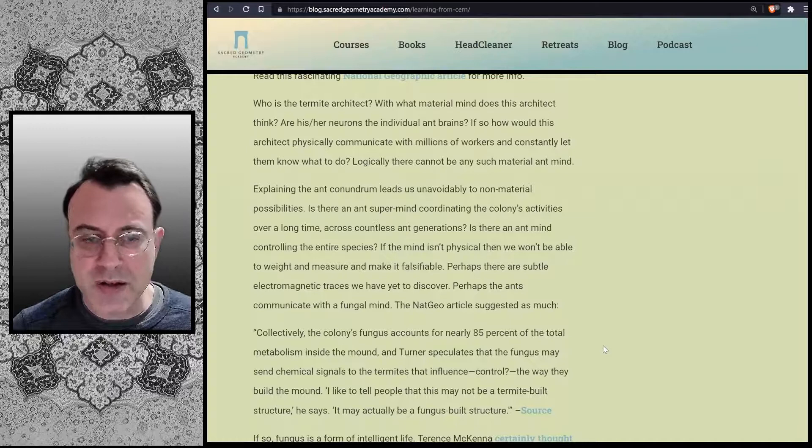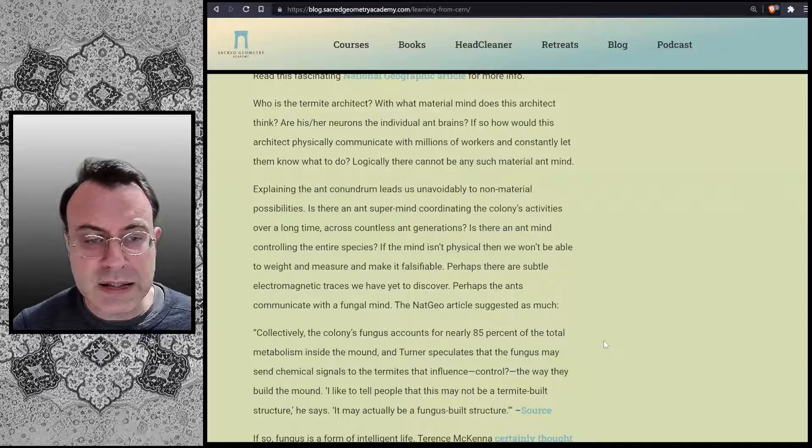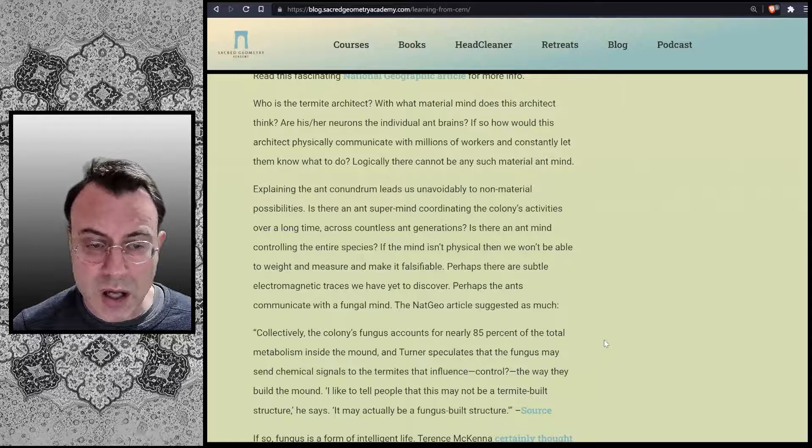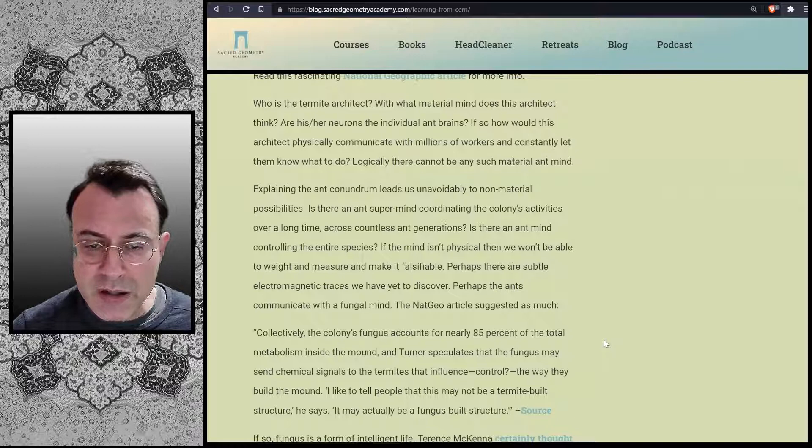Read this fascinating National Geographic article to learn more. Who is the termite architect? With what material mind does this architect think? Are his or her neurons the individual ant brains? If so, how would this architect physically communicate with millions of workers and constantly let them know what to do? Logically, there cannot be any such material ant mind. Explaining the ant conundrum leads us, unavoidably, to non-material possibilities. Is there an ant supermind coordinating the colony's activities over a long time across countless ant generations? Is there an ant mind controlling the entire species?